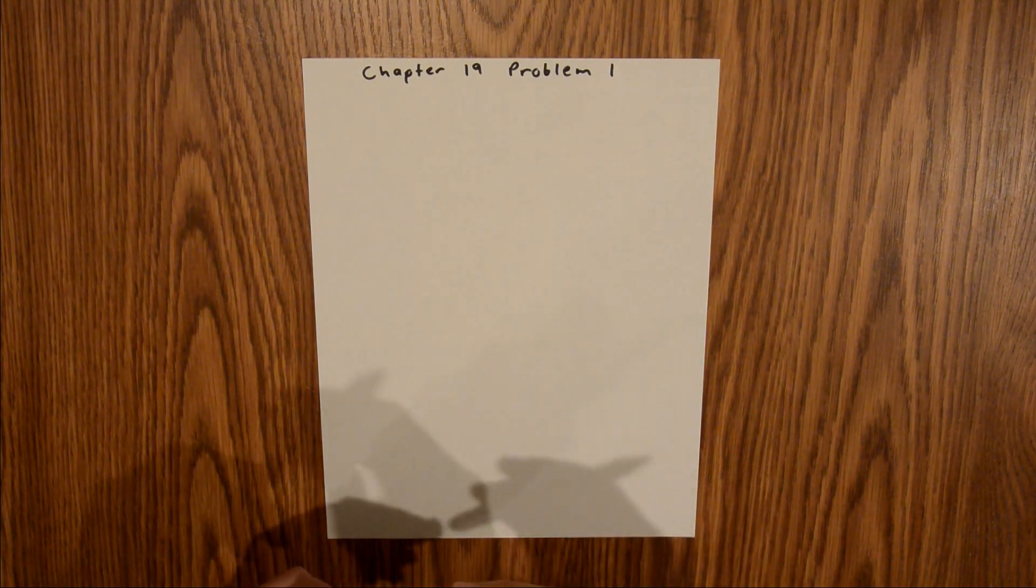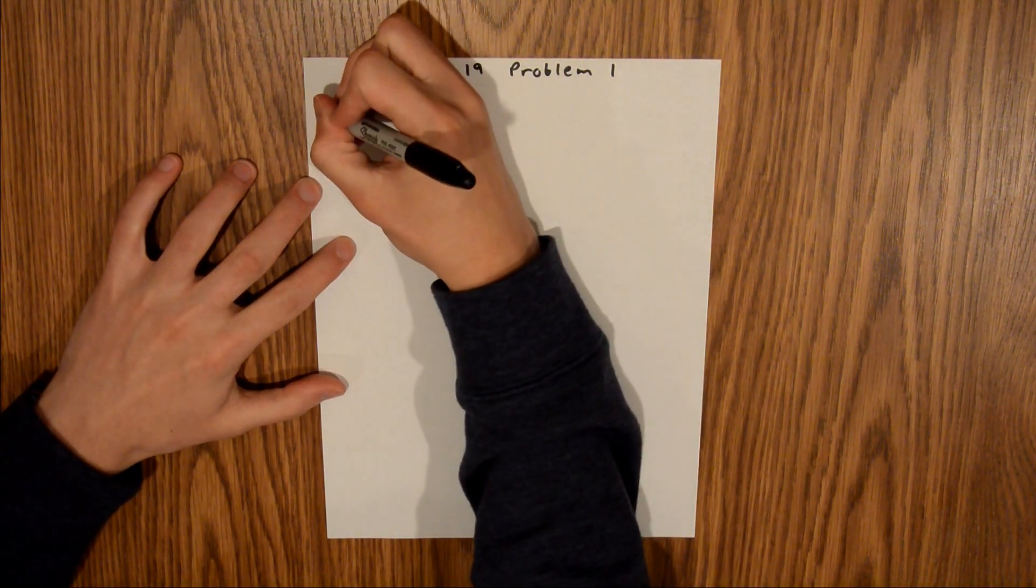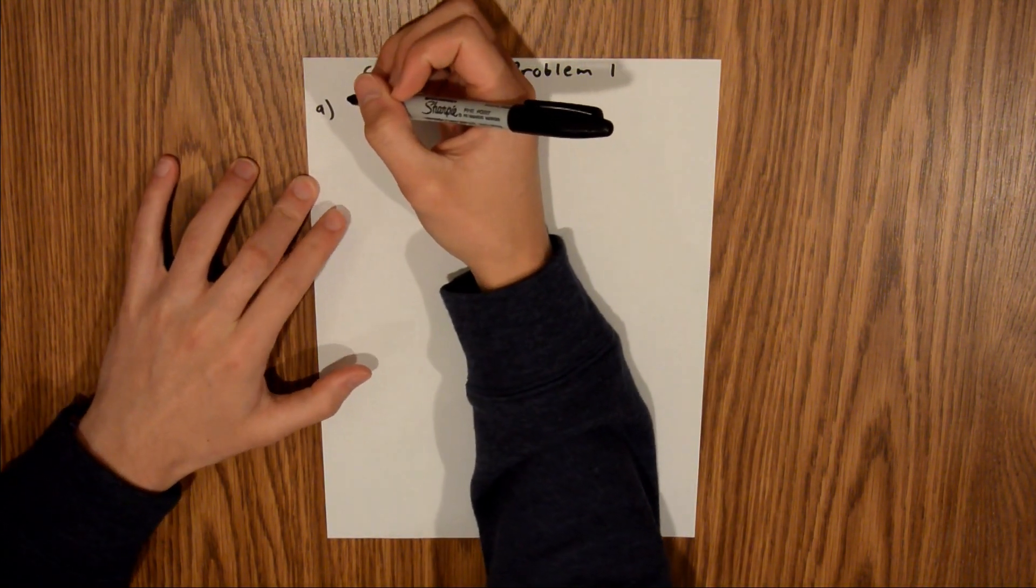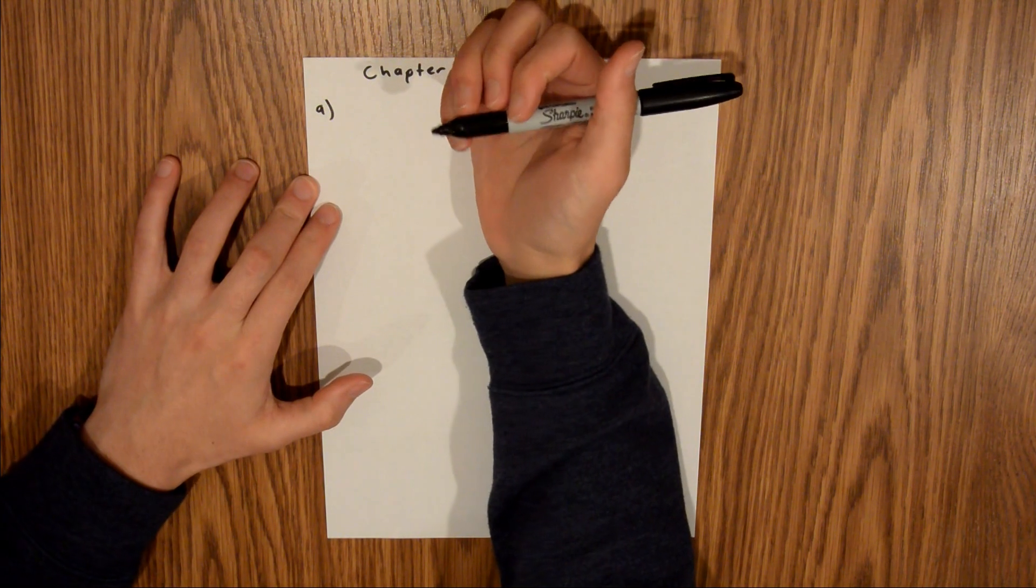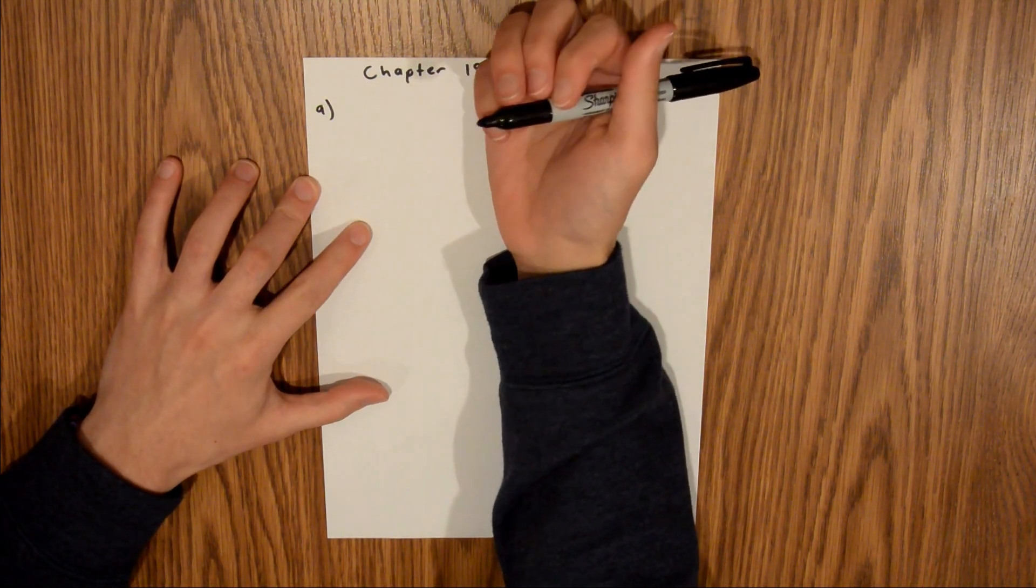And so, for Part A, we want to know how many moles, and we are given a mass. And so, to convert from mass to moles, we need to use the molar mass.